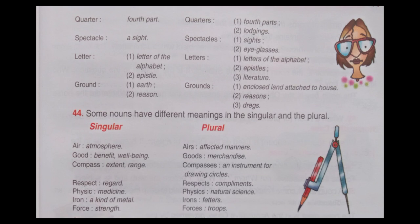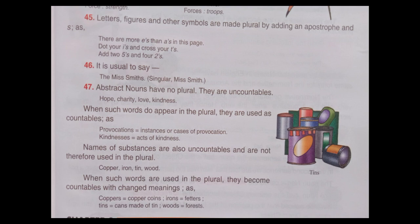Some nouns have different meanings in the singular and the plural. Air means atmosphere; airs means affected manners. Good means benefit or well-being; goods means merchandise. Compass means extent or range; compasses means an instrument for drawing circles. Respect: regards means respect or compliments. Physic means medicine; physics means natural science. Iron means a kind of metal; irons means fetters. Force means strength; forces means troops.